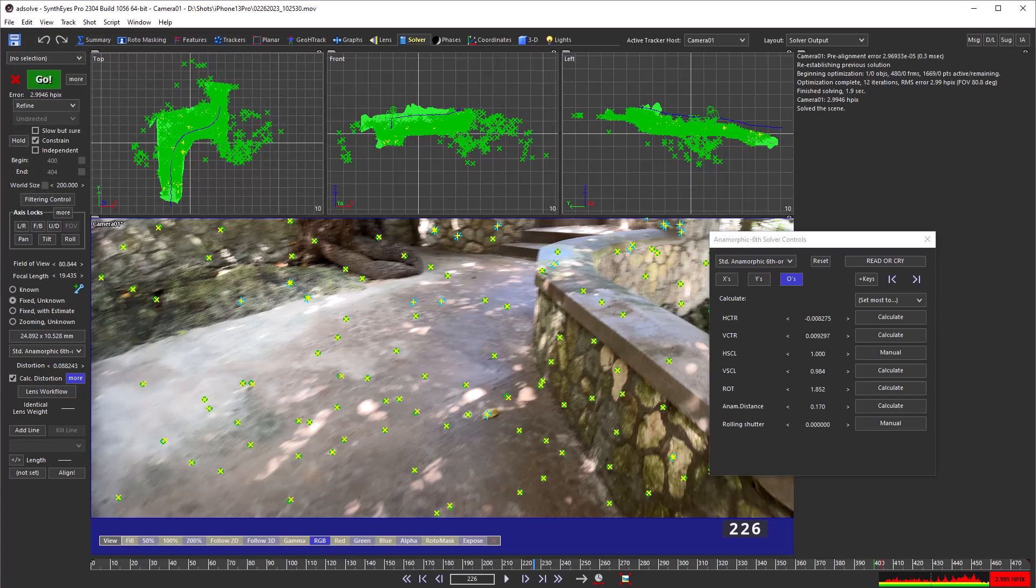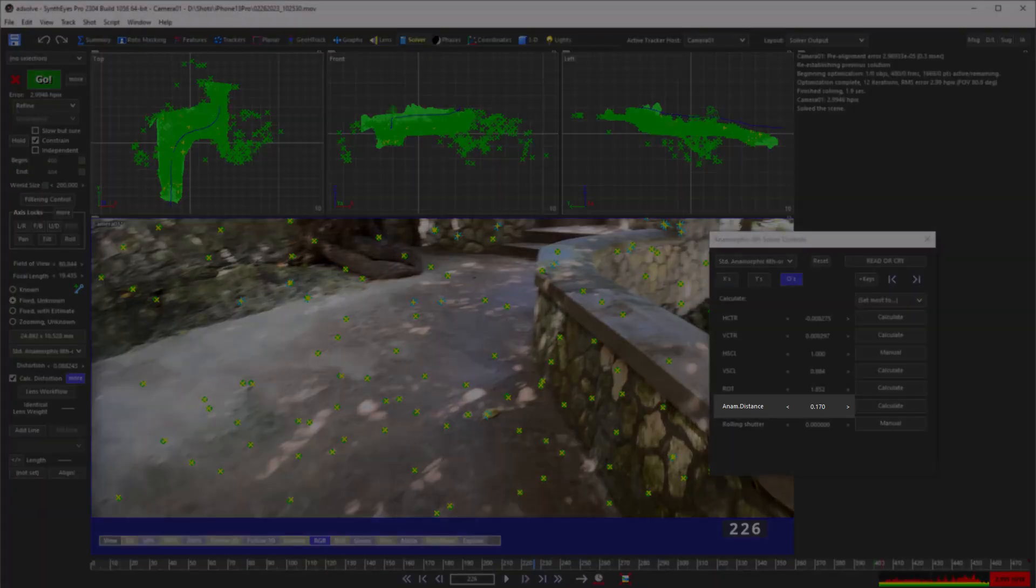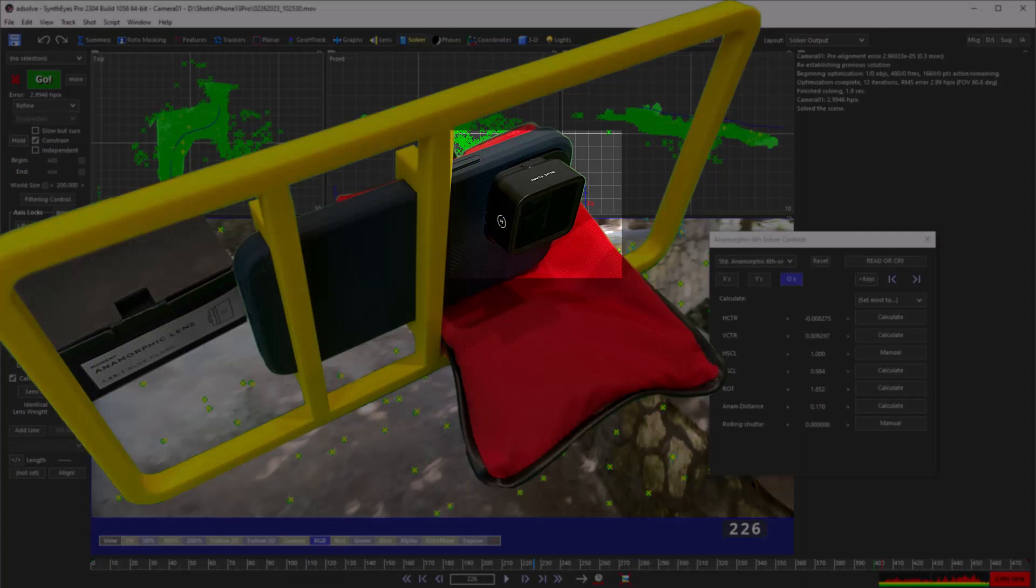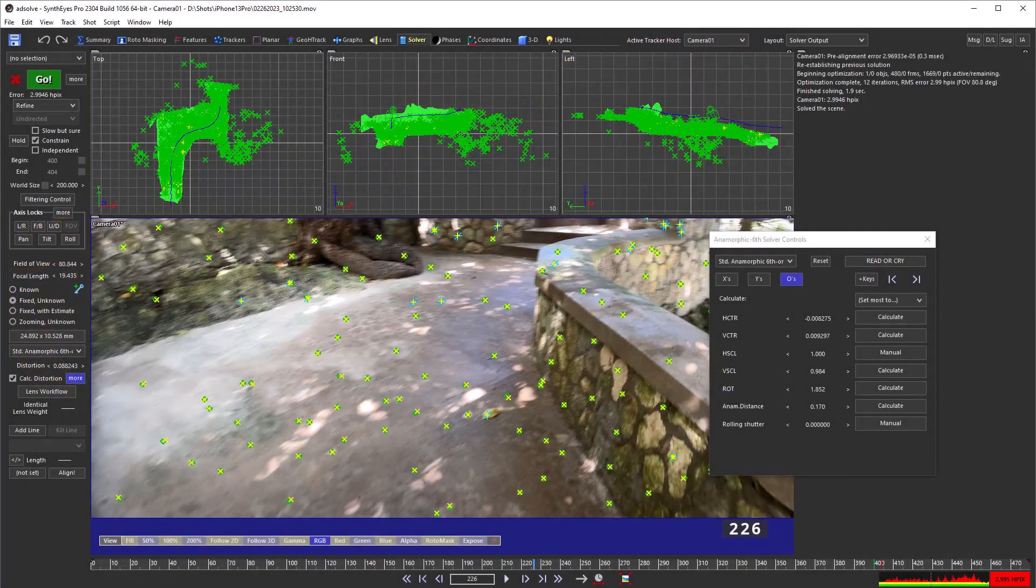The scene has been scaled up by a factor of 10, from meters to decimeters, so the calculated value is 1.7 centimeters. The phone lens is small, but the anamorphic lens is several centimeters on a side, suggesting this value might be realistic. You can see the value calculated doesn't affect the solve very much.